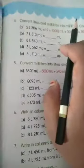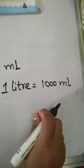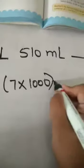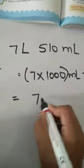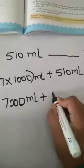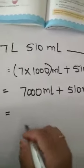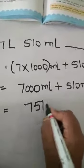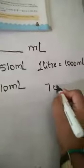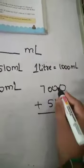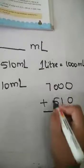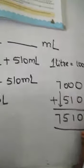Second question: 7 liters 510 milliliters equals to dash milliliters. Since 1 liter equals to 1000 milliliters, 7 into 1000 milliliters plus 510 milliliters gives 7000 plus 510. Adding: 0 plus 0 is 0, 0 plus 1 is 1, 0 plus 5 is 5, and 7 stays as it is. So 7510 milliliters.